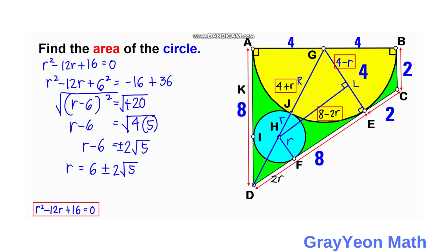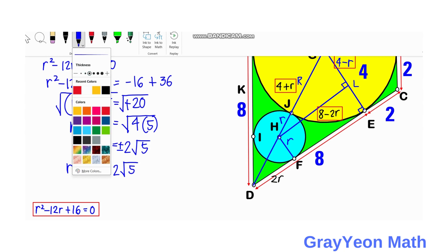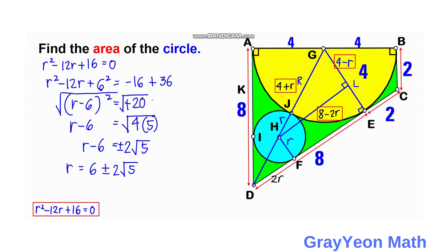Since this is a quadratic equation we have two solutions, but the valid solution is r = 6 − 2√5, because 6 + 2√5 would be larger than the radius of the yellow semicircle (R = 4), which is geometrically impossible. So the radius of the blue circle is r = 6 − 2√5.